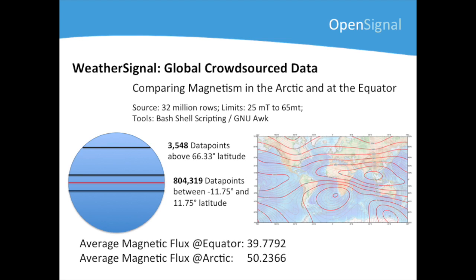To explore WeatherSignal's crowdsourced data, we looked at a different sensor, the magnetometer, and asked the question whether the average reading of the magnetometer would be higher above the Arctic circle compared to around the equator. Using 32 million rows of data, we separated the rows that belong to the Arctic region and those that belong to the region around the equator. Taking into account the range of values for the Earth's magnetic field and limiting the data by these, we found that the average magnetic flux was indeed higher in the Arctic than at the equator.